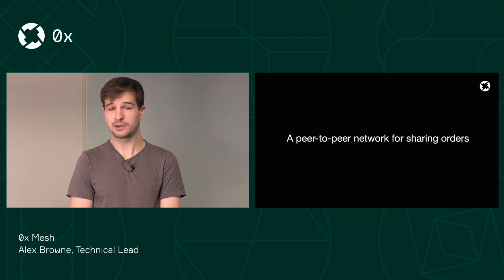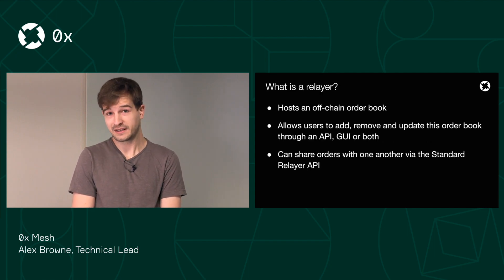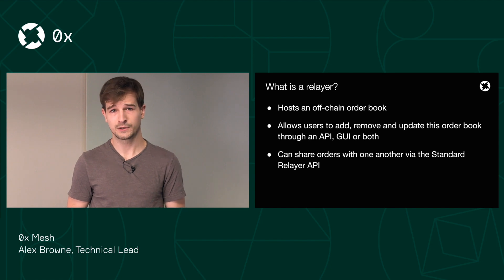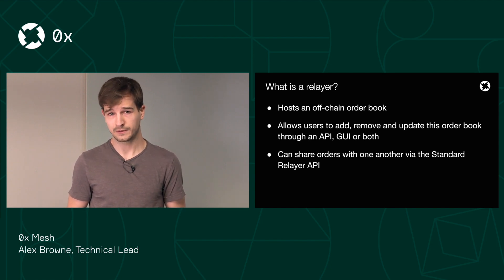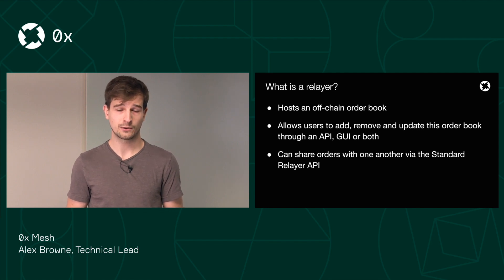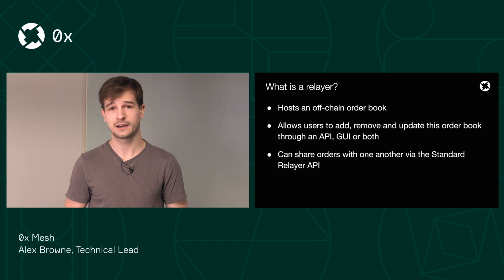0xMesh is a peer-to-peer network for sharing orders. I'm going to take a step back and talk about how sharing orders on 0x works today. 0x features off-chain order books and on-chain settlements. Orders are just encrypted payloads that you can share any way that you want — you could email them to somebody, you could send them over snail mail. Once you have an order that you want to fill, you go to the 0x smart contracts to actually fill the order on-chain.